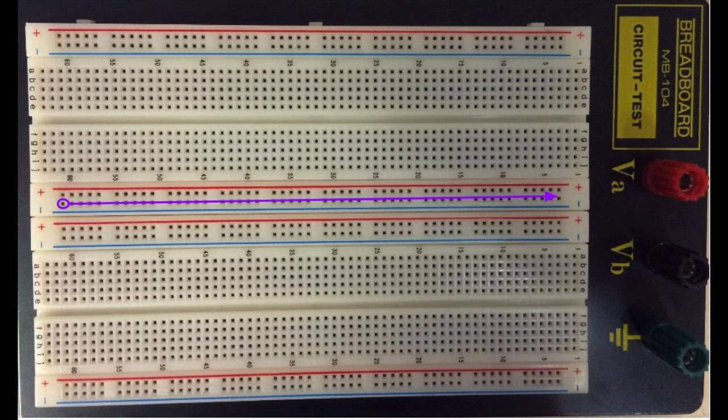These rows are typically used to connect common signals to your circuit such as positive voltage, negative voltage, or ground.